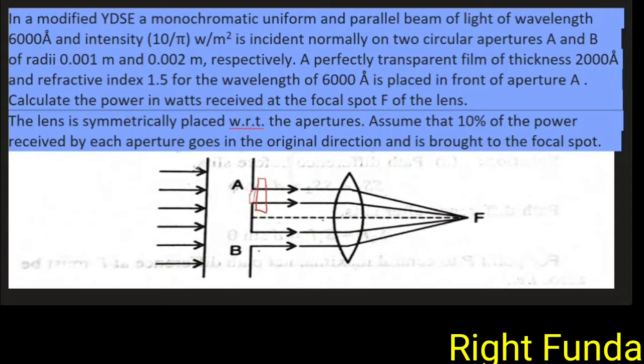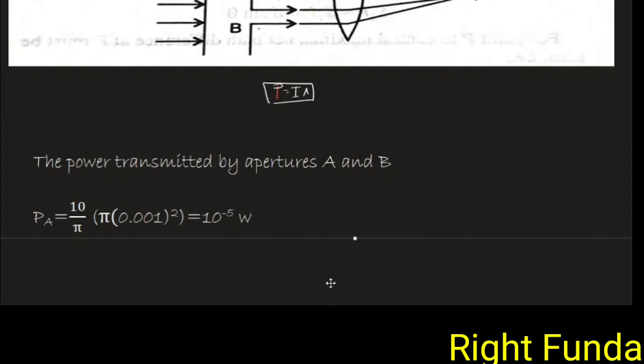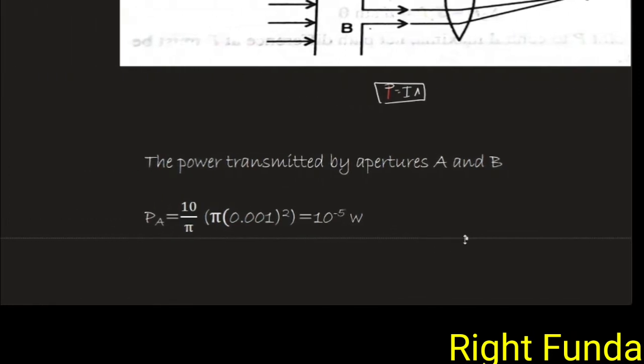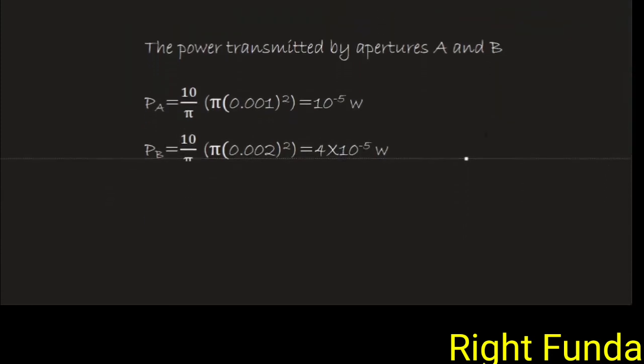In this case, how much energy is incident per second? I have to multiply the intensity by the area of the slits. Power received will be proportional to their area or radius square. The power transmitted by aperture A is PA equals 10 by pi times pi r squared. And PB can be calculated similarly. There is power incident on this one.